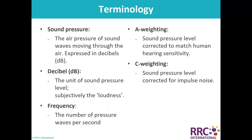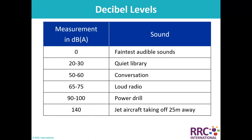Key terminology: sound pressure is the air pressure of sound waves moving through the air, expressed in decibels (dB). Frequency is the number of pressure waves per second. A-weighting corrects sound pressure level to match human hearing sensitivity; C-weighting corrects for impulse noise. Example decibel levels: faintest audible sounds 0 dB, quiet library 20–30 dB, conversation 50–60 dB, loud radio 65–75 dB, power drill 90–100 dB, jet aircraft taking off at 25 meters 140 dB.